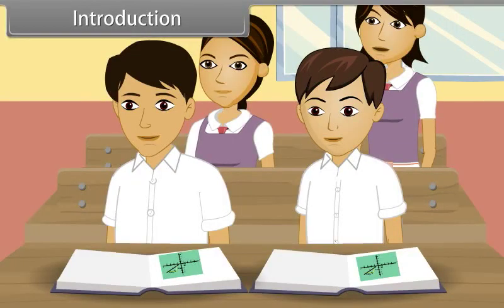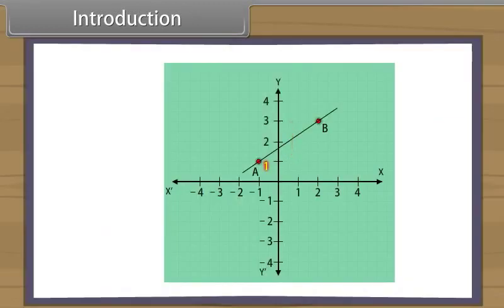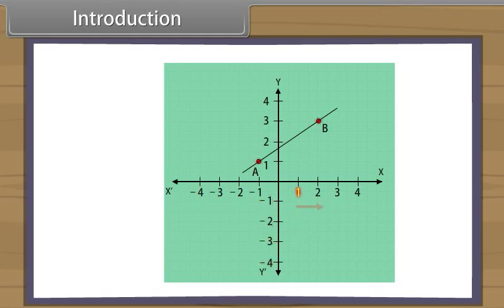What are these movements? We can see that the up movement is positive while a down movement is negative. In the same manner, a right movement is positive while a left movement is negative.